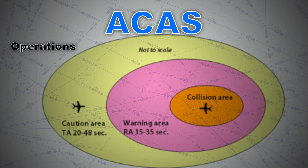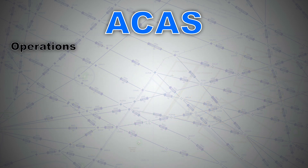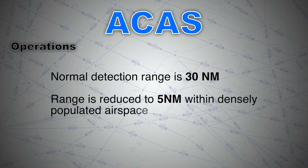The range of the intruder is determined by the time lapse between transmission of the interrogation and receiving the response. An interrogation signal is sent out approximately once every second. However, in densely populated airspace where many aircraft are being monitored, the interrogation period is extended to once every five seconds, with priority given to the closest. The normal detection range is about 30 nautical miles, reducing to 5 nautical miles when operating in reduced surveillance mode.